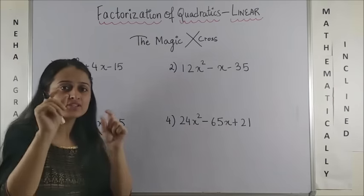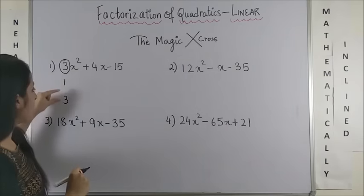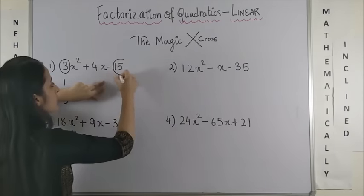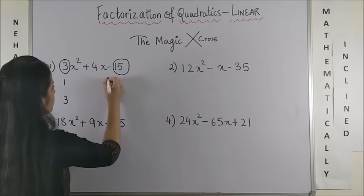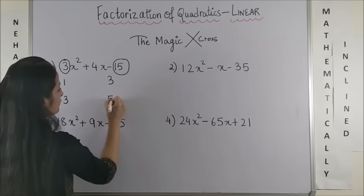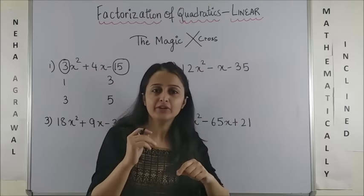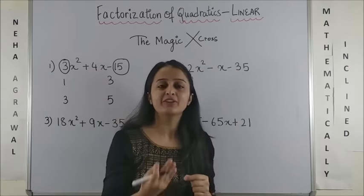What I usually do is the smaller factor I put on the top and the bigger one below. Now, same way you are going to split this. So, I can do it as maybe 3 into 5. Now, whether you have to write 3 into 5 or 5 into 3, that will come with experience.